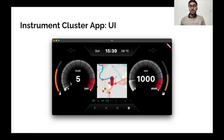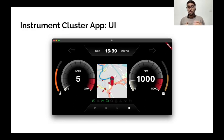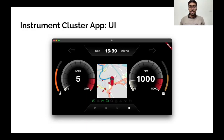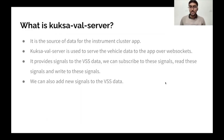For the backend, to get details like speed, RPM, and all the other signals, we first get the data from a KUKSA server. The KUKSA server provides signals so we can read them — for example, the speed signal or the tachometer signal. It provides signals mapped to the VSS data, and we can also add custom signals to the VSS data using the KUKSA server.